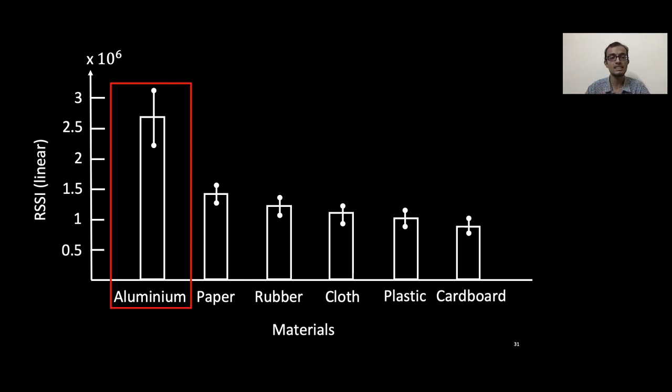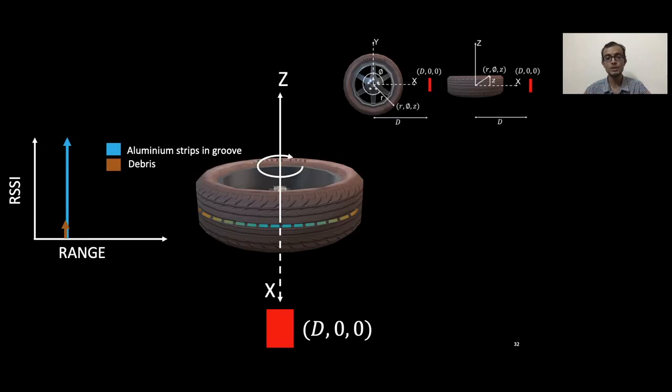We explore different materials and not surprisingly, we find metallic elements, more specifically aluminum, to be highly reflective to the radar signal. So we lay out aluminum strips in the groove so that the radar reflection from the aluminum strip is much stronger than the debris reflection.